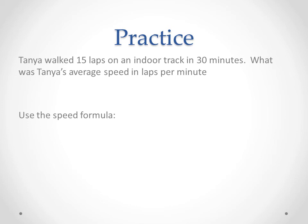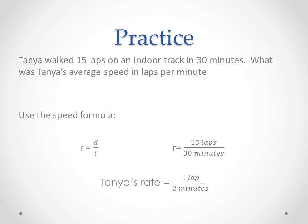Here's a practice question: Tanya walked laps on an indoor track in 30 minutes. What was Tanya's average speed in laps per minute? We use the speed formula: rate equals distance over time. The problem tells us she walked 15 laps in 30 minutes. So her average speed — Tanya's rate — was one lap every two minutes.